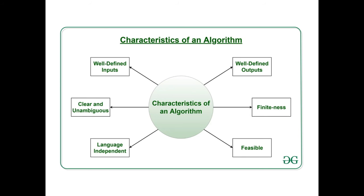Next, the algorithm must be language independent. This means that after writing the algorithm for a particular problem, you must be able to write the syntax — implement it — in any programming language used to communicate with your system. Your algorithm must be implementable in Java, Python, C, Julia, JavaScript, or any other language. It must be universal in nature.